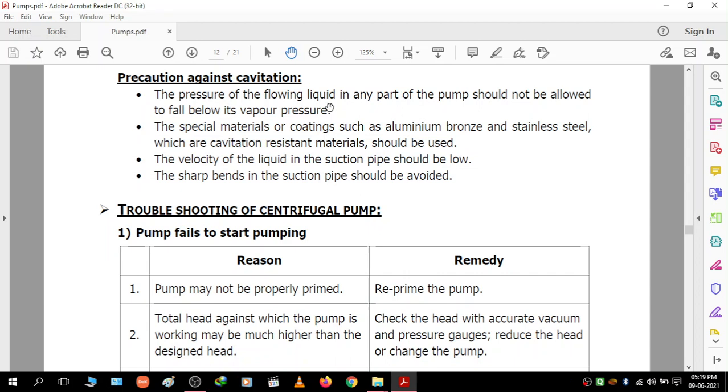Precautions against cavitation: The pressure of the flowing liquid in any part of the pump should not be allowed to fall below its vapor pressure. Special materials or coatings such as aluminum bronze and stainless steel which are cavitation-resistant materials should be used.